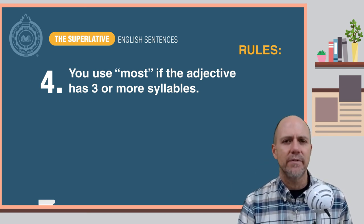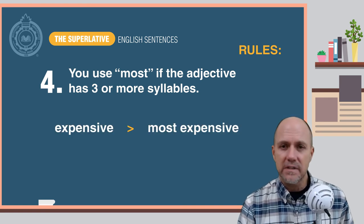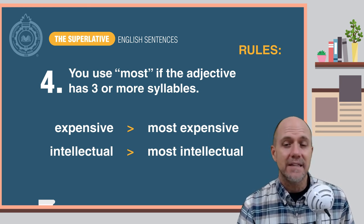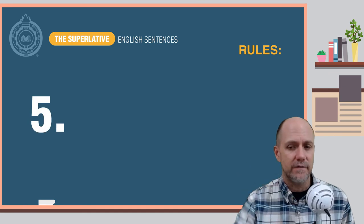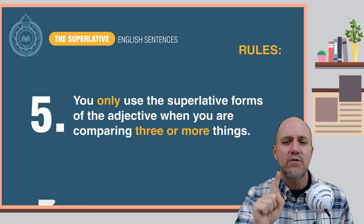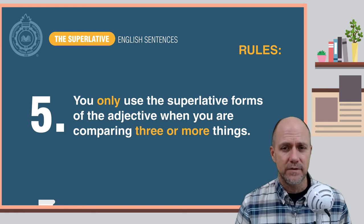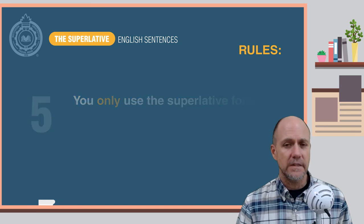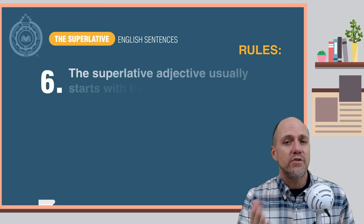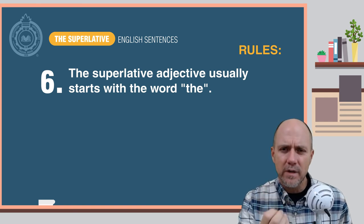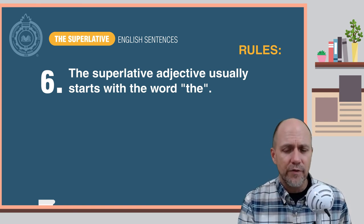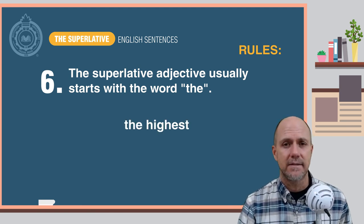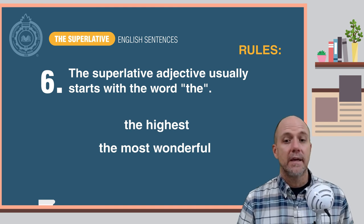Here are some examples: expensive becomes most expensive, intellectual becomes most intellectual. Rule number five: you only use the superlative forms of adjectives when you are comparing three or more things. Rule number six: as you saw in the examples above, the superlative adjective usually starts with the word 'the' — for example, the highest, the most wonderful, the best.